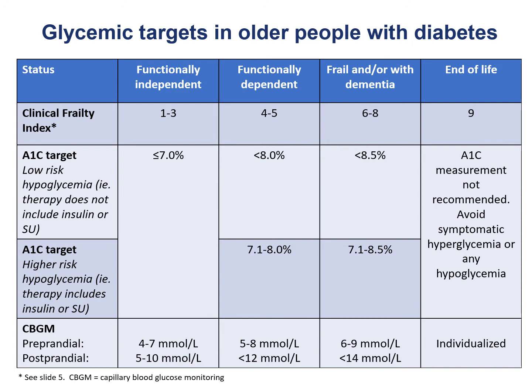This slide shows glycemic targets in older patients with diabetes. For a clinical frailty index of 1 to 3 — functionally independent — the A1c target is less than 7%, preprandial 4 to 7, postprandial 5 to 10. For functionally dependent patients, grade 4 to 5 on the Rockwood scale, the A1c target is less than 8% unless there is higher risk of hypoglycemia, in which case 7.1 to 8%, preprandial 5 to 8, postprandial less than 12. For frail patients or those with moderately advanced dementia, categories 6 to 8, A1c less than 8.5% at low hypoglycemia risk, or 7.1 to 8.5% if risk is higher; preprandial 6 to 9 mmol/L, postprandial less than 14.